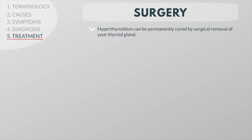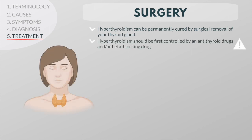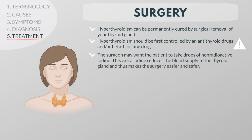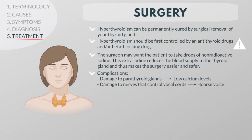Hyperthyroidism can also be permanently cured by surgical removal of all or most of the thyroid gland. An operation could be risky unless the hyperthyroidism is first controlled by an anti-thyroid drug or beta-blocking drug. The surgeon may want the patient to take drops of non-radioactive iodine, which reduces the blood supply to the thyroid gland and makes the surgery easier and safer. Major complications of thyroid surgery occur rarely but include damage to the parathyroid glands causing low calcium levels, and damage to the nerves controlling the vocal cords causing a hoarse voice. After the thyroid gland is removed, the patient will become hypothyroid, and thyroid hormone levels can be restored to normal with a once-daily thyroid hormone supplement.